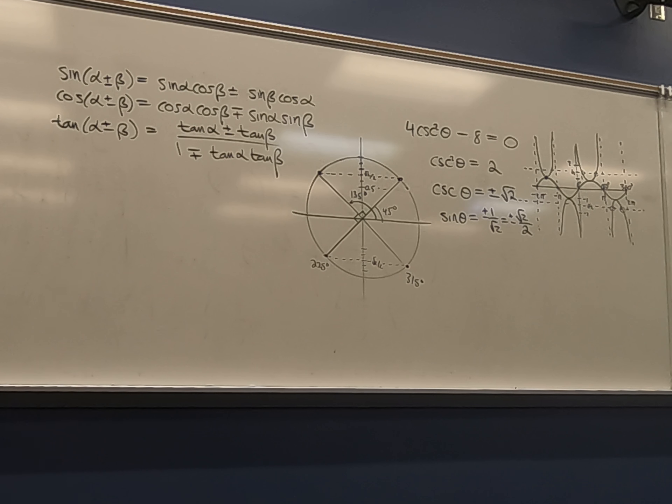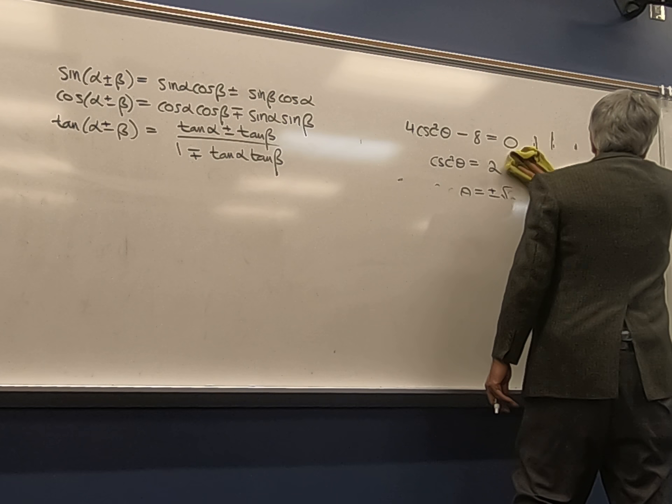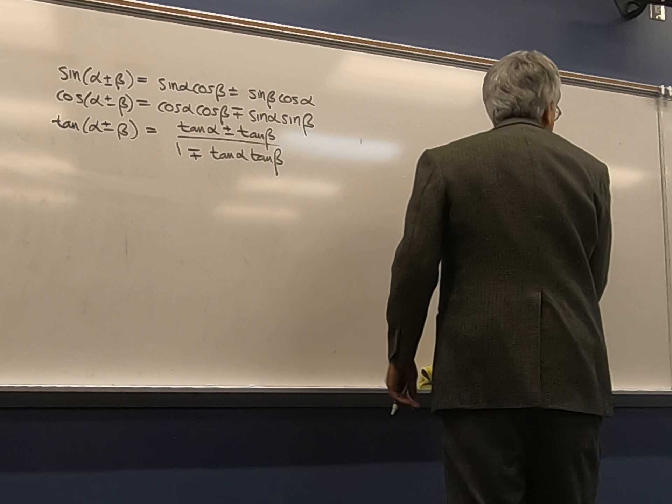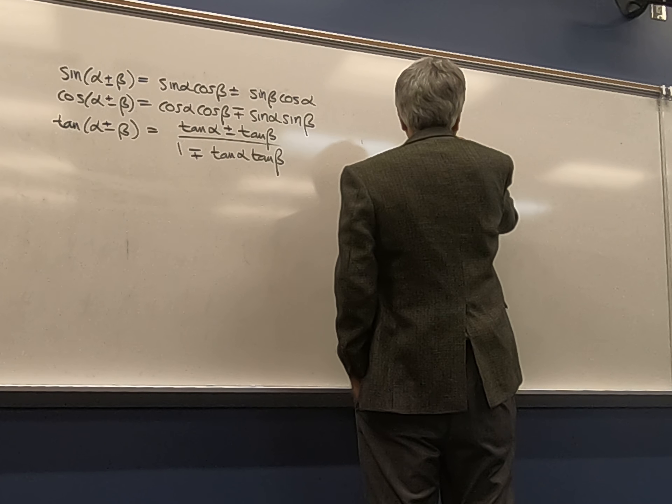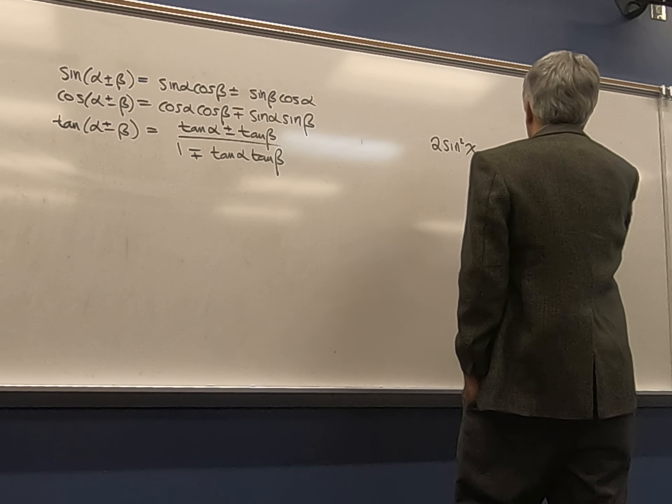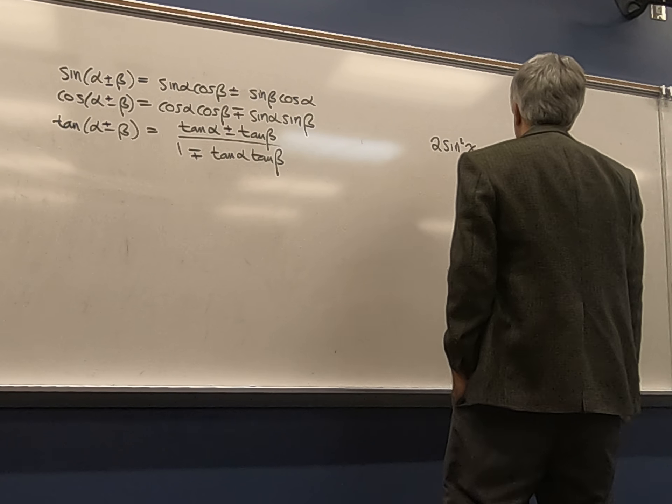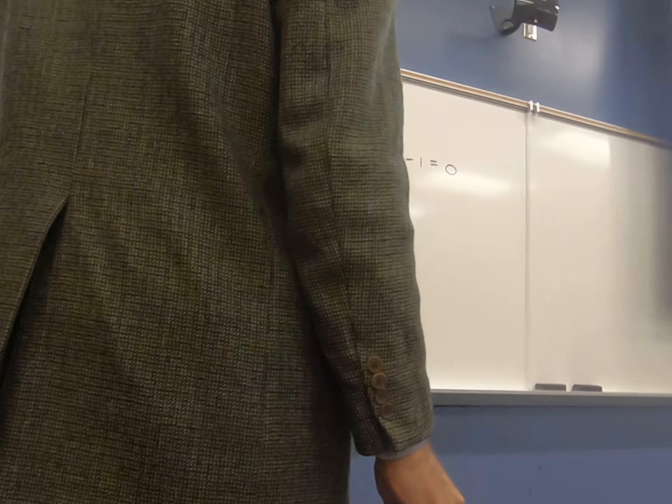All right, so what's going on here? All solutions, again, they want degrees. Separate multiple solutions. So if there are no solutions, enter no solution. Yeah, we can divide both sides by six, right? So let's do that just before we even write it down. So two sine squared x minus cosine x minus one equals zero.